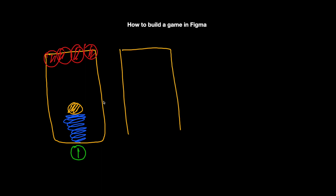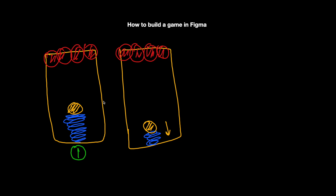So the first frame will be the resting stage — nothing is being touched. This becomes stage one. The second stage is when you compress the spring and the ball is pushed down. The balloons remain at the same position at the top, but now the ball has been pushed down. This becomes your second stage.